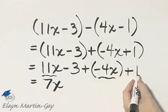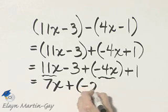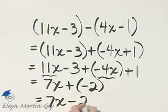Negative 3 plus 1 is negative 2. So you can write plus negative 2 if you'd like, but we can also write that as simply 7x minus 2. I can go no further because these are unlike terms.